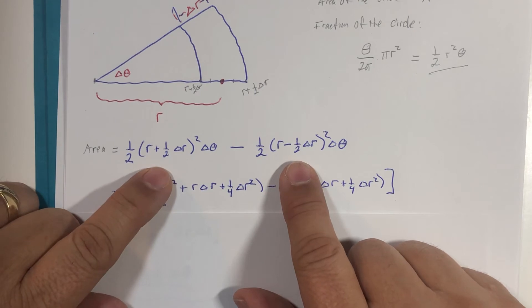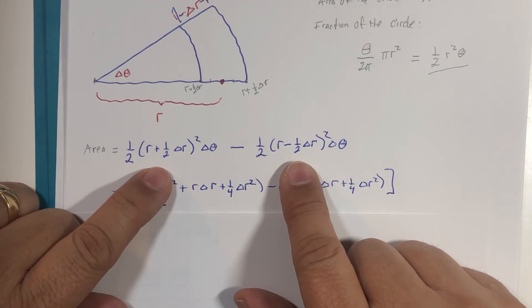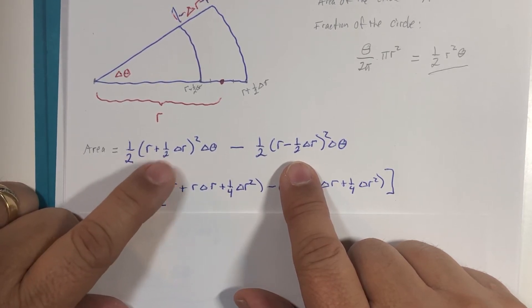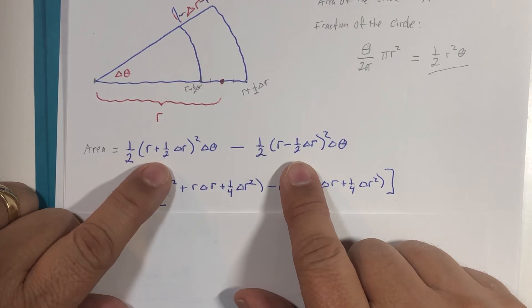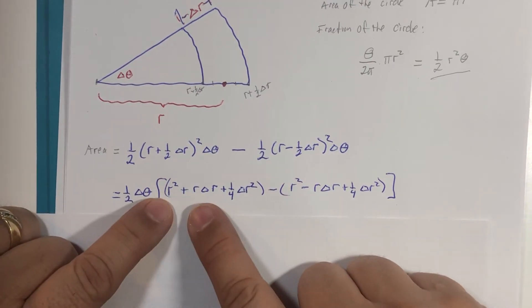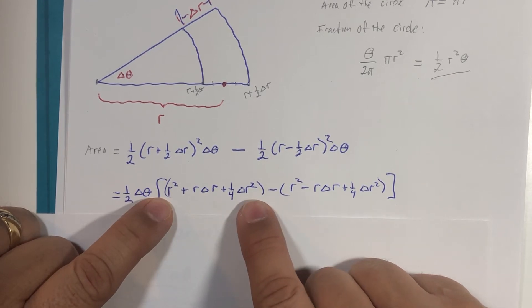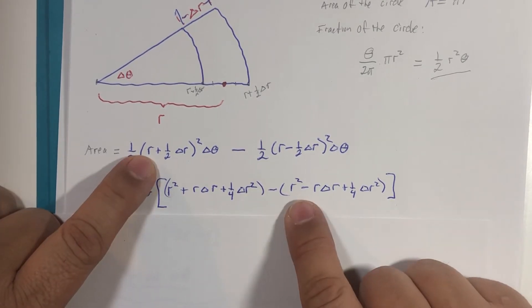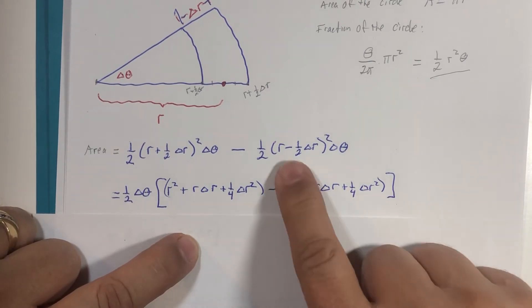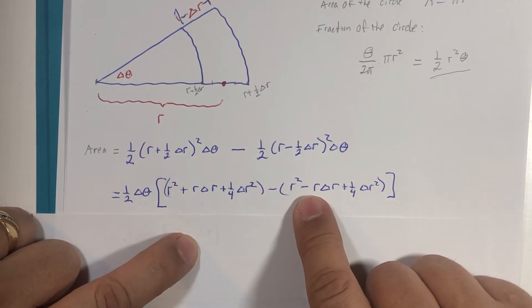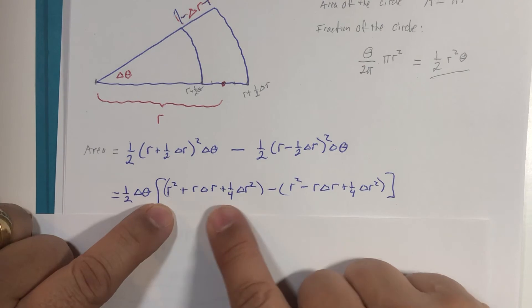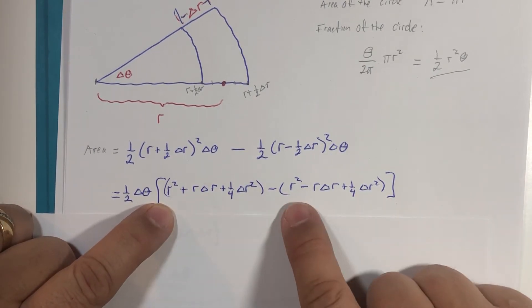If we were to use FOIL or some other form of multiplication of two binomials, squaring the binomials, we would get r² plus r multiplied by Δr plus ¼ Δr² here, and this will be the same expression except it'll be with the subtraction sign here and there. There are all kinds of like terms here.